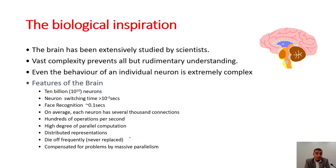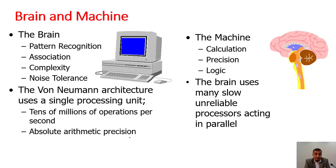Features of the brain: tens of billions of neurons, neurons switch at a time of 10^-3 seconds, face recognition can be done in 0.1 seconds, and on average each neuron has several thousand connections. The brain has pattern recognition, association, complexity, and noise tolerance. The von Neumann architecture uses a single processing unit with tens of millions of operations per second. The brain uses many slow, unreliable processors acting in parallel when compared to a machine.